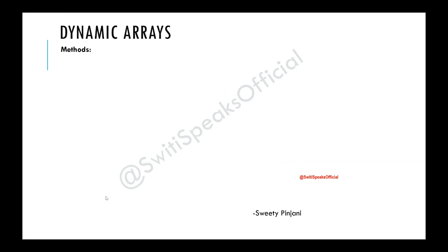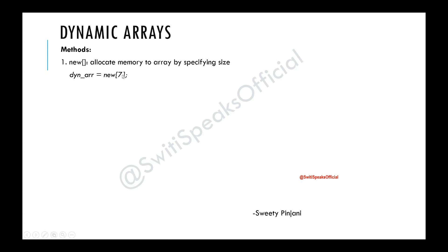Now let's see some of the methods of dynamic array. The first method is new, and we use it to allocate memory to the array by specifying the size. For example: dynamic_array = new(7). This means I am allocating a size of 7 to this dynamic array, so it will have 7 elements of type int, because I declared it as int.